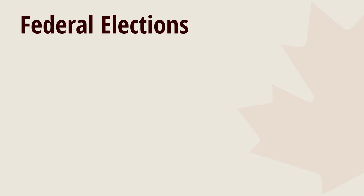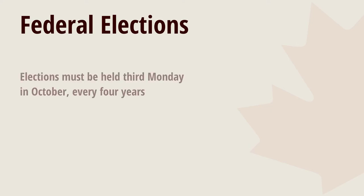By law, federal elections must be held on the third Monday in October every four years. The Prime Minister is allowed to ask the Governor-General to call an earlier election.